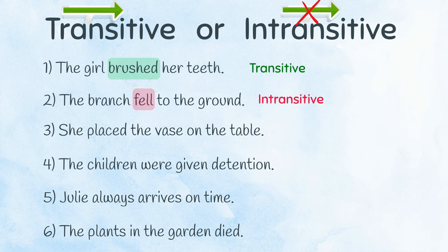Number three: placed. Placed what? The vase. The vase is receiving the action, which makes it a direct object. The action moves from the subject, through the verb, and to the direct object. Placed is transitive.